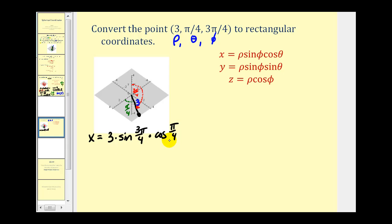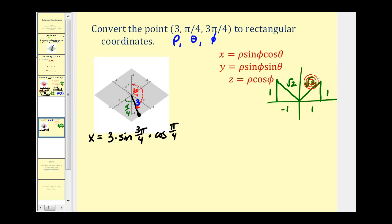Let's sketch these angles in standard position. Three pi over four has a 45 degree reference angle in the second quadrant, and pi over four is the same reference triangle in the first quadrant. So x equals three times sine of three pi over four, which is one over square root two, times cosine of pi over four, which is also one over square root two. That gives us three over two — square root two times square root two equals two. So the x coordinate is three halves.